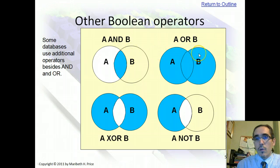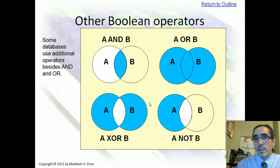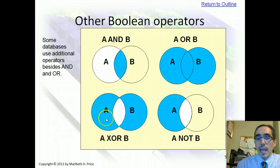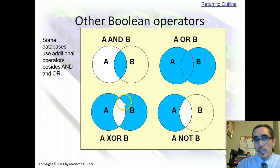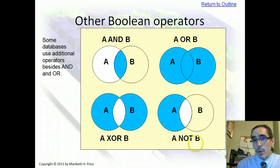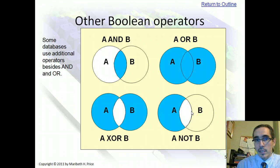Boolean operators include AND and OR, which we've just been going over. There are other types of Boolean operators with very specific meanings. For example, A exclusive OR means anything that belongs to A or B but not both — it excludes the intersection, the overlap. A NOT B means anything that's part of A that is not part of B — it excludes anything that's part of B including the overlap, looking exclusively for A and not B. Those are the different types of Boolean operators you can use.